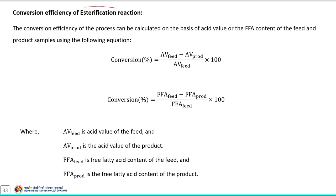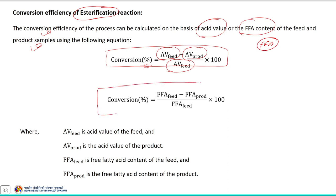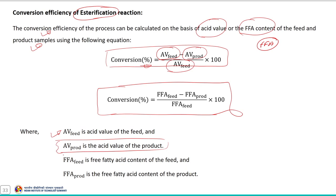To determine the extent of the esterification reaction, the conversion efficiency can be calculated on the basis of acid value or free fatty acid content of the feed and product sample using this equation: Conversion (%) = (AV_feed − AV_product) / AV_feed × 100. Similarly, if the free fatty acid content is known, conversion efficiency can also be calculated using FFA values. The suffix 'feed' indicates the acid value or FFA of the feed, and the product values are represented accordingly.